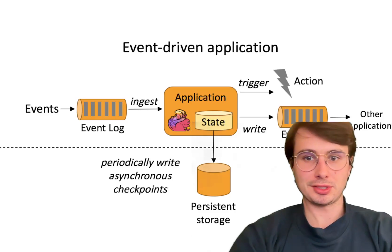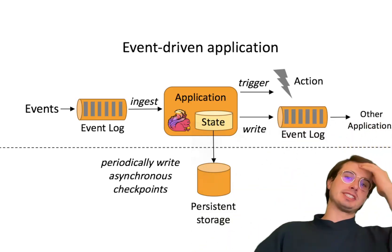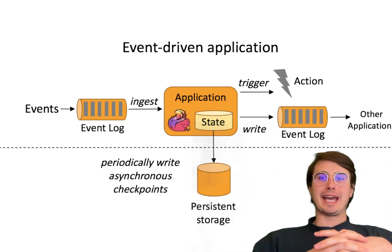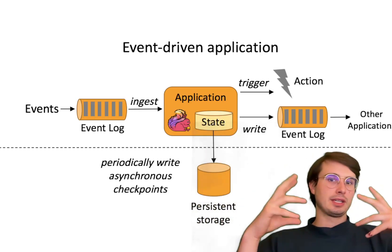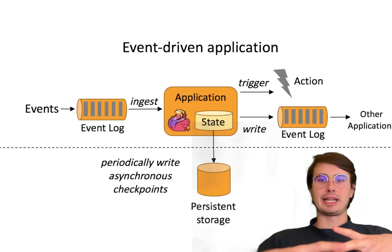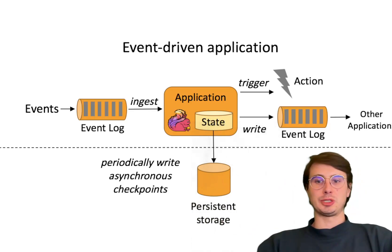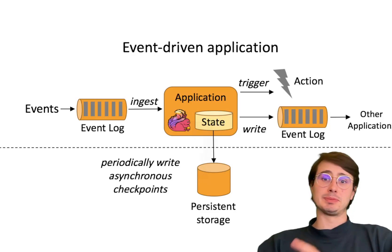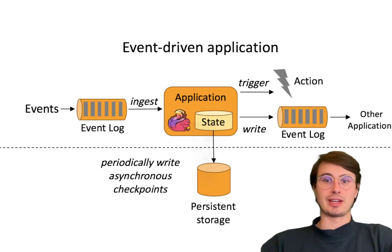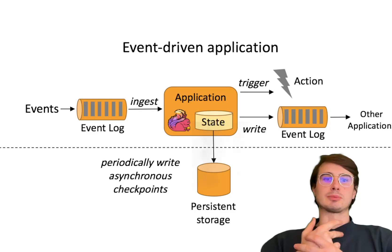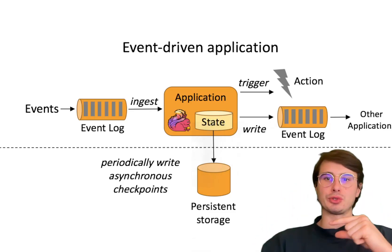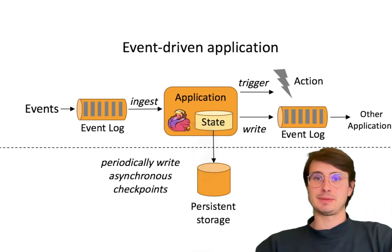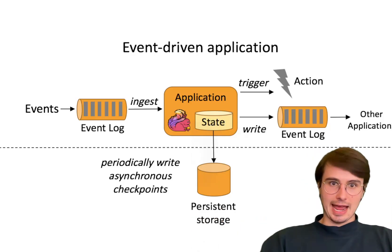Summary of best use cases for Apache Flink: number one is real-time analytics — Flink's low latency capabilities make it well suited for applications that require instantaneous insights, like real-time dashboards that update immediately. Number two is fraud detection — stateful processing and exactly-once semantics make it great for monitoring transactions or detecting suspicious behavior in real time. Number three is complex event processing, like analyzing sensor data streams or processing logs for anomalies.